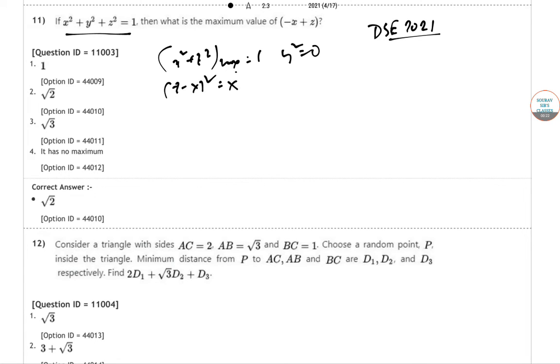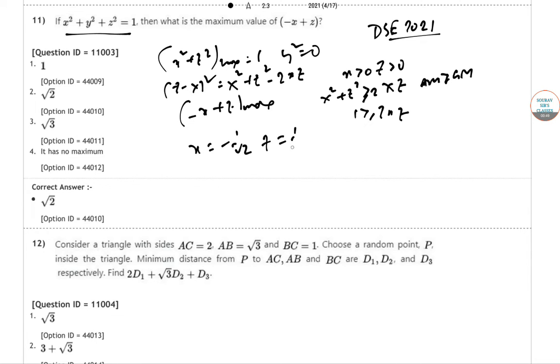So z minus x whole square equal to x square plus z square minus 2xz. Now for x greater than 0 and z greater than 0, minus x plus z is max when x square plus z square greater than 2xz. So we can use AM greater than GM inequality. And 1 greater than equal to 2xz. If x equal to minus 1 by root 2, take z equal to 1 by root 2. So 2xz equal to max value equal to 1.